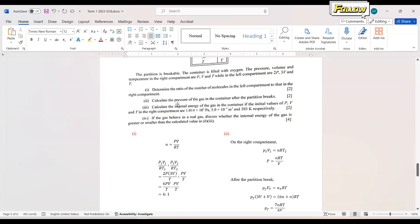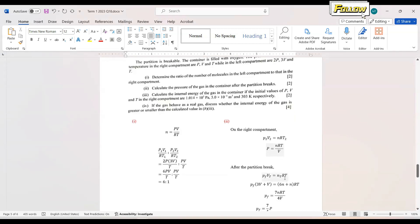The next question is the pressure of gas in the container after the partition breaks. You also need to obtain the expression of the pressure. Before that, we refer to the right compartment where P equals NRT over V. And when the partition breaks, we also refer to PV equals NRT, but we need to review the change in each of the variables.